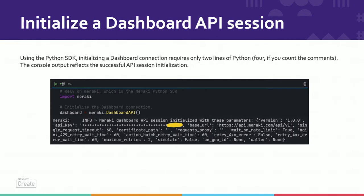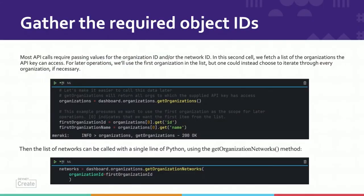So that means you don't have to add the key itself to your source code — which would be risky if you were going to share this code with anyone else or publish it on GitHub. And you also don't have to format any of the HTTP headers, which would be tedious and would complicate the code. Most API calls will require passing values for organization ID or network ID, depending on what you're actually doing. In this second cell, we fetch a list of the organizations that the API key can access.